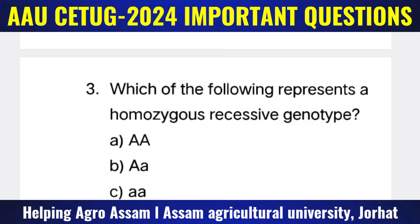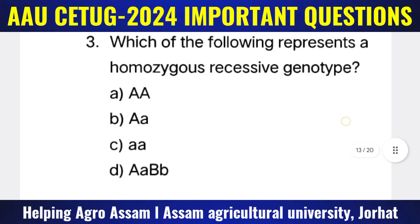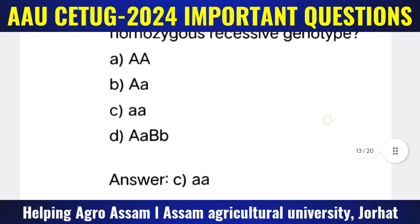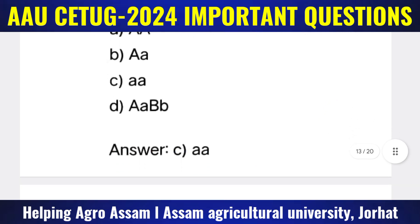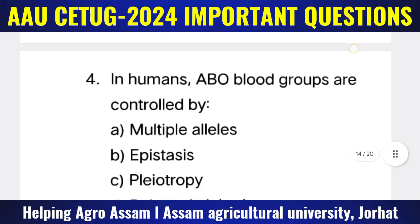Question 3: Which of the following represents a homozygous recessive genotype? Options: (A) AA, (B) AA (capital), (C) aa, (D) AaBb. The correct answer is option C — aa (small a, small a).